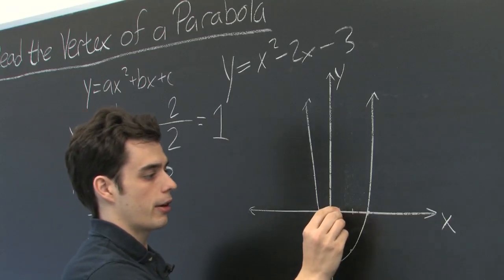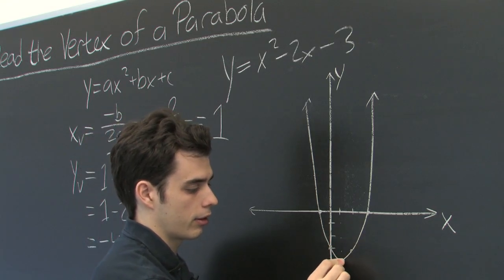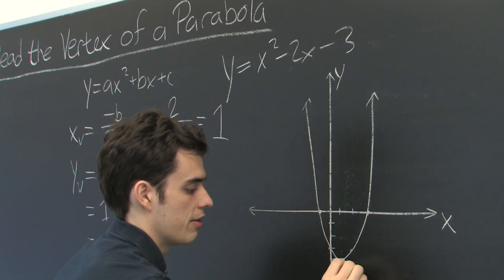So let's go ahead and plot that on our graph. 1, 1, 2, 3, 4. There's our vertex.